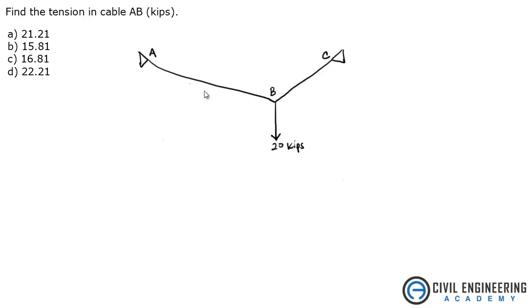Welcome to Civil Engineering Academy. Today we're going to be solving a problem from structures. This is a statically determinate structure. It's a cable with a point load, and the question states find the tension in cable AB.